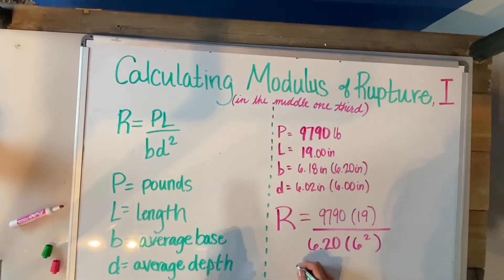Over 6 squared is going to be 36 and we'll times that by 6.20, so 223.2 is going to give us 186010.